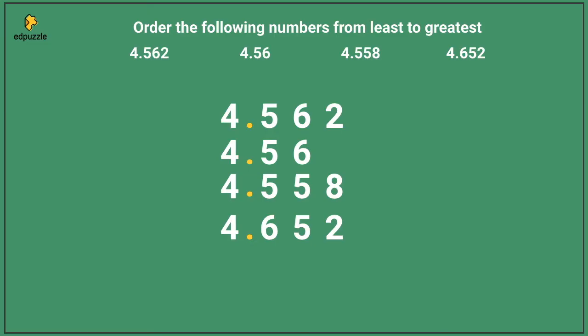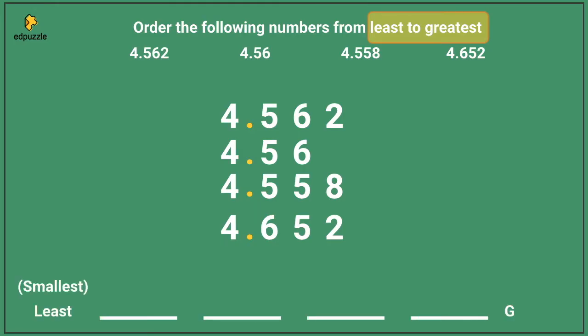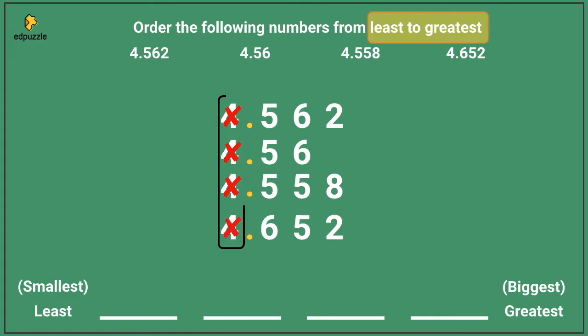Now I can double check that all of my decimal points are lined up. I need to look back at my problem and check the way I'm supposed to order my numbers. This problem says I should order them from least to greatest — least means smallest, and greatest means biggest. Now I can start comparing, starting with the largest place value first, which here are these 4s. All of these are the same digit, so I'm going to cross them out and check the next place value. When I compare this place value, I have a 5, a 5, a 5, and a 6. The 6 is different — 6 is bigger than these 5s, so 4.652 must be the biggest.